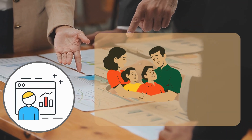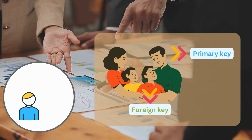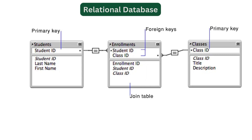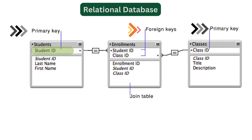You can suppose that parent equals to primary key and children equal to foreign key in a database. In the above diagram, you can see the primary key and foreign key relationship between the students, enrollments, and classes data tables. In the students data table, student ID is the primary key and it establishes a relationship with the enrollments table, acting as a foreign key. In the classes data table, class ID is the primary key and it establishes a relationship with the enrollments table, acting as a foreign key.